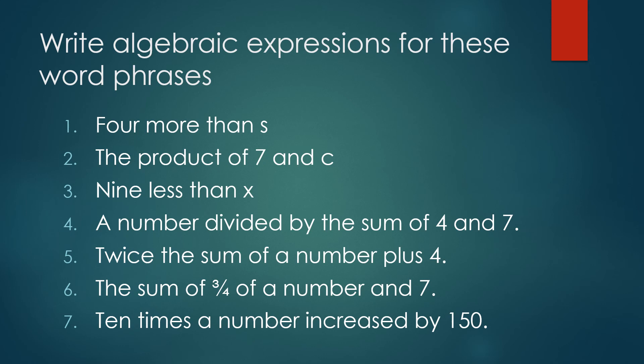9 less than x is x minus 9, not 9 minus x. Please children, don't do the mistake in order. A number divided by the sum of 4 and 7. A number, if you take a, is a upon 4 plus 7.